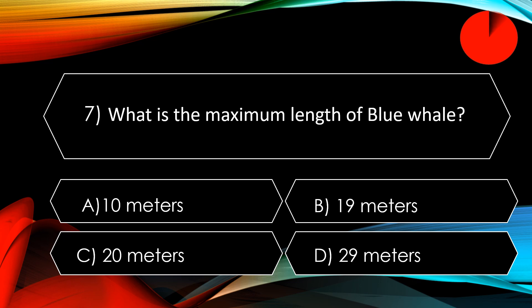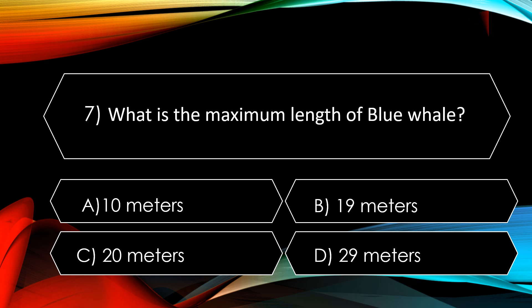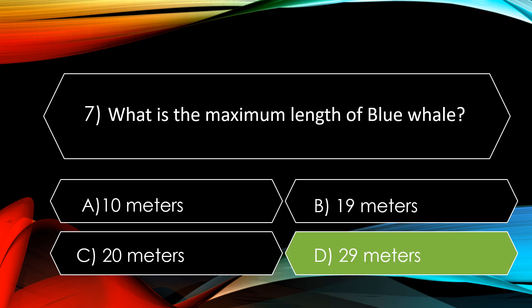Question number seven: what is the maximum length of a blue whale? The options are A. 10 meters, B. 19 meters, C. 20 meters, and D. 29 meters. The correct option is D. 29 meters — a blue whale has been found to be as long as 29 meters.